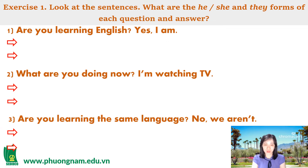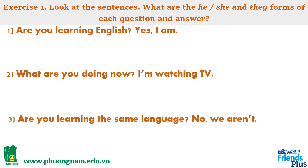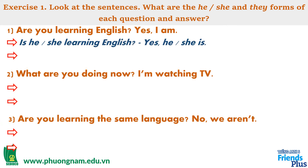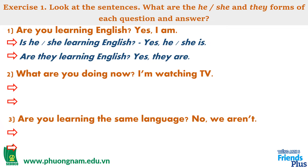Exercise number 1. Look at the sentences. What are the he, she, and they forms of each question and answer? Cô có 3 câu hỏi. Theo các em, khi chúng ta thay đổi chủ ngữ là he hoặc she và they, thì những câu hỏi và câu trả lời này sẽ thay đổi như thế nào? Câu thứ 1: Are you learning English? Yes, I am. Với chủ ngữ là he và she, thì cô có câu là: Is he or she learning English? Yes, he or she is. Và với chủ ngữ là they: Are they learning English? Yes, they are.